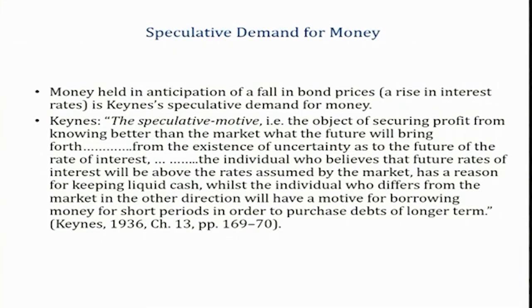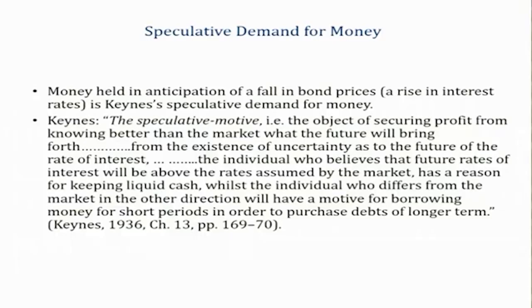The concept of speculative demand for money was introduced by John Maynard Keynes. He defined speculative demand for money as the money held in anticipation of a fall in bond prices. This is Keynesian speculative demand for money. Keynes introduced the concept of speculative motive — that is, the object of securing profit from knowing better than the market what the future will bring forth, given the existence of uncertainty as to the future rate of interest.